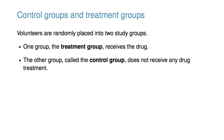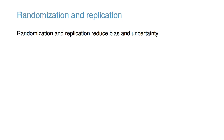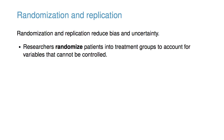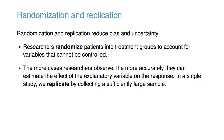However, there are a handful of important considerations to ensure the data are as valid and helpful as possible. First, we consider randomization and replication. Randomization and replication reduce bias and uncertainty. Researchers randomize patients into treatment groups to account for variables that cannot be controlled. Additionally, the more cases researchers can observe, the more accurately they can estimate the effect of the explanatory variable on the response. In a single study, we replicate by collecting a sufficiently large sample.